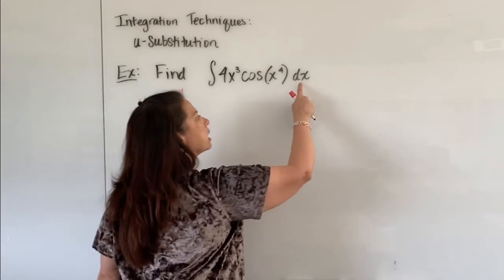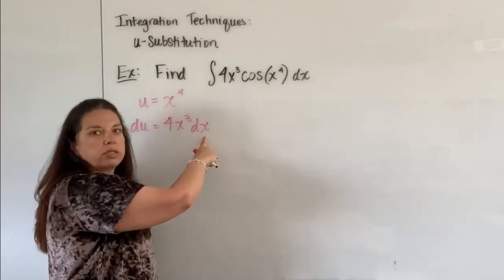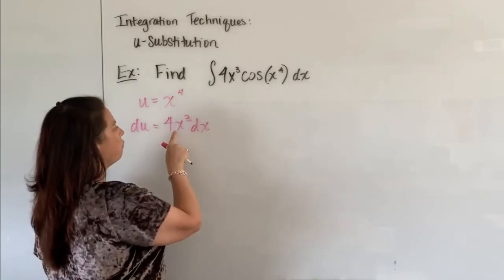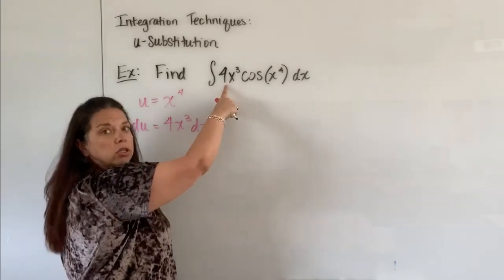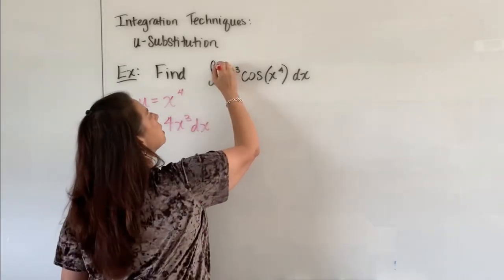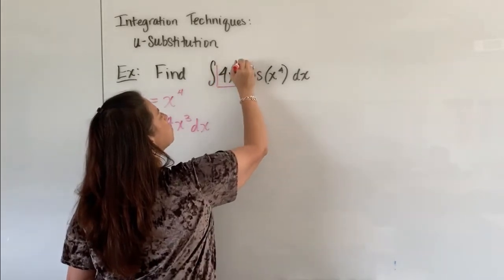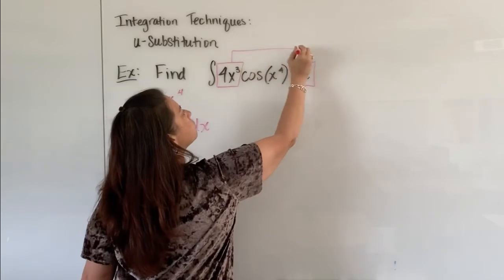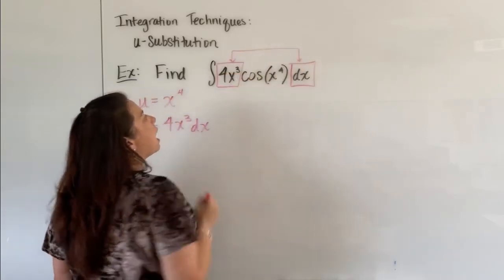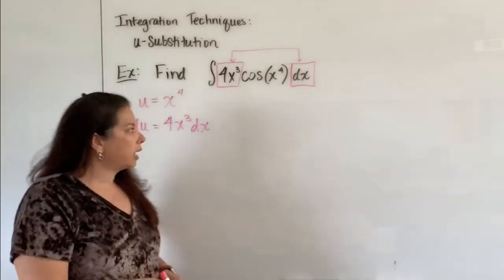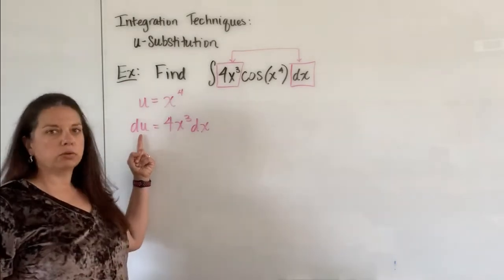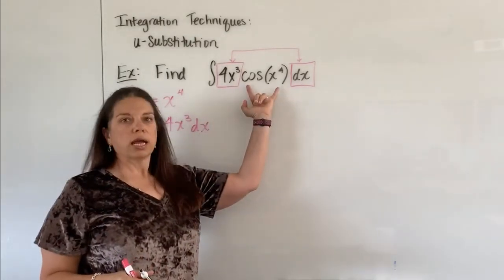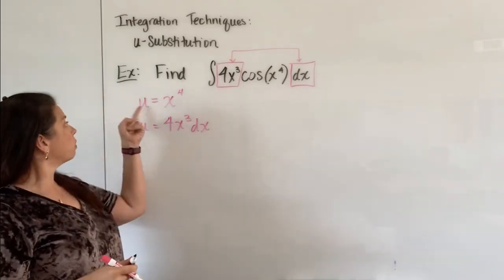I know I have a dx over here. I also recognize I've got a 4x³ here, but I have a 4x³ over here. That's great news because if I take this piece right here and this piece over here, those right away as a unit together can get exchanged out for a du, just a plain du.